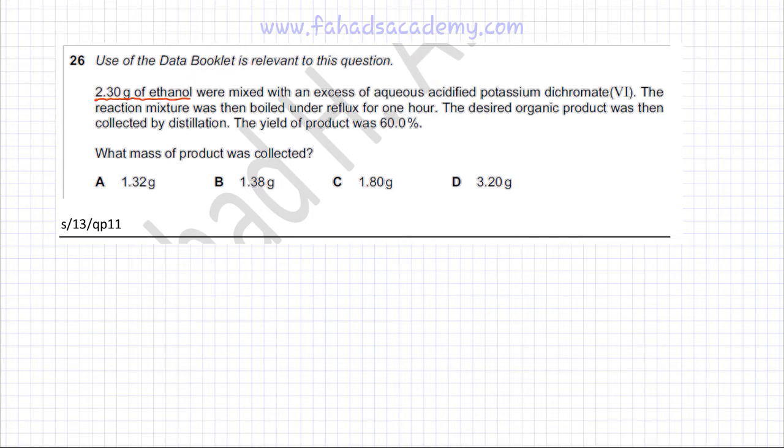So first, we have ethanol which is CH3CH2OH. If you oxidize it with potassium dichromate, the product that would be produced is going to be a carboxylic acid, ethanoic acid.